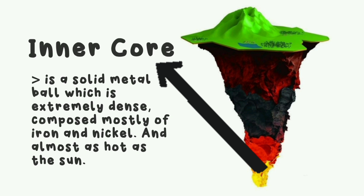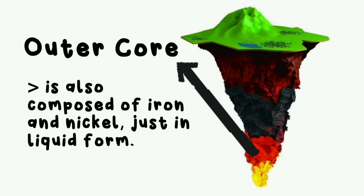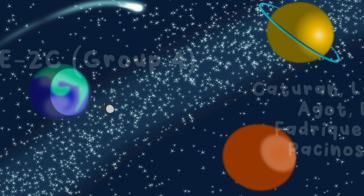The inner core is a solid metal ball which is extremely dense, composed mostly of iron and nickel, and almost as hot as the sun. The outer core is also composed of iron and nickel, just in liquid form.